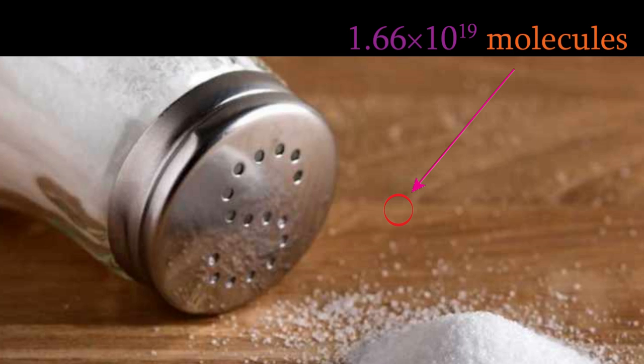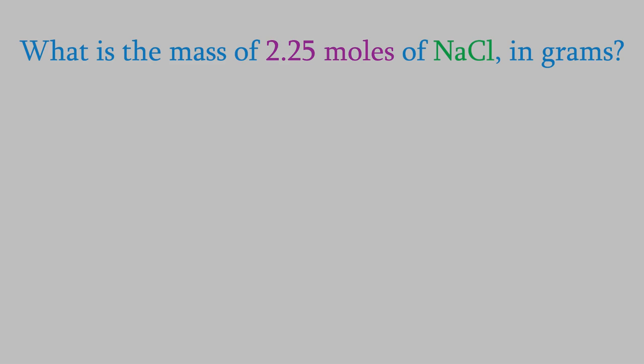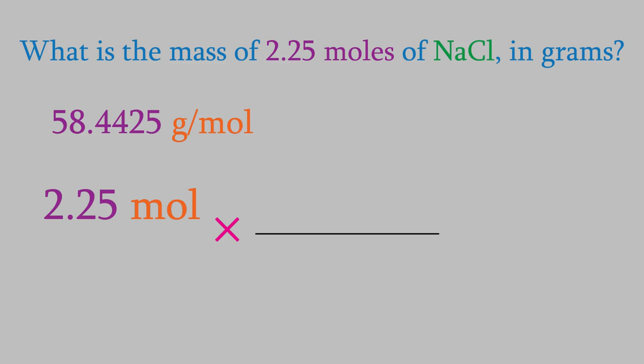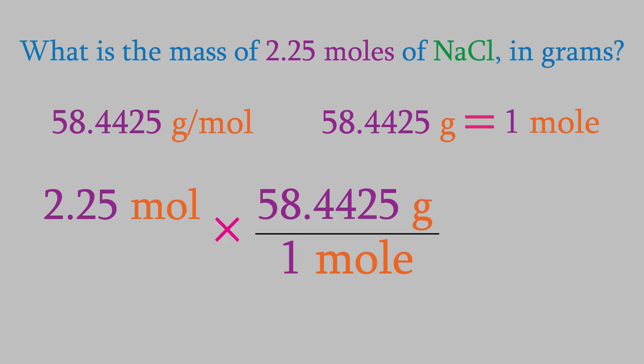After those examples, we now know how to get a lot of information just by starting with a chemical formula and the mass or number of moles. For example, suppose we have 2.25 moles of NaCl. How many grams is that? We start with the number we're given, 2.25 moles. And now we need to convert from moles to grams. The number of grams in a mole is different for every compound, but we get it by using the masses on the periodic table. For NaCl, we already calculated that. It's 58.4425 grams per mole. So our conversion factor has 58.4425 grams on one side and one mole on the other side. We want moles to cancel out, so that's what we'll put in the denominator. That gives us an answer of 131 grams.